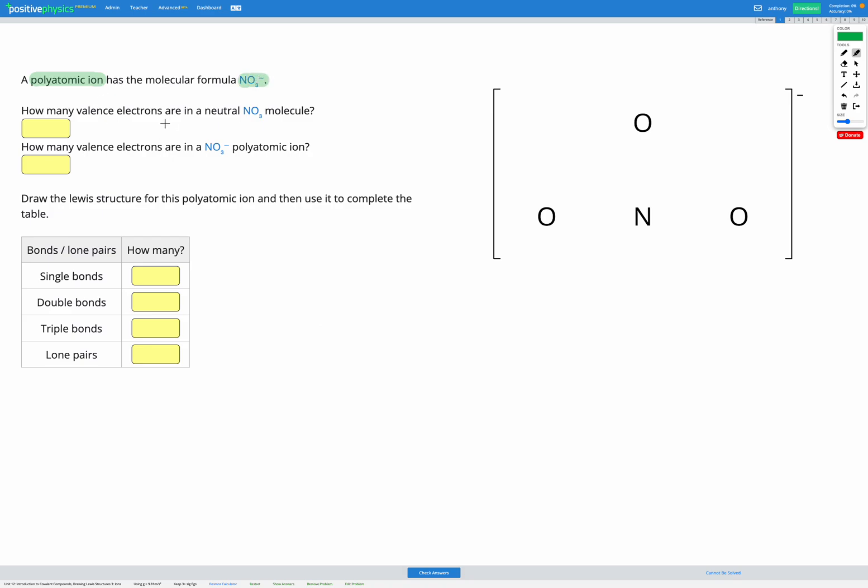So our first step is to calculate the number of valence electrons in a neutral NO3 molecule. So let's go to our periodic table.